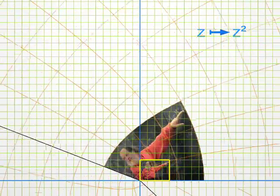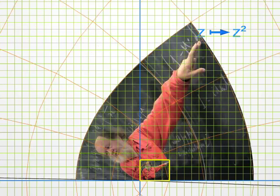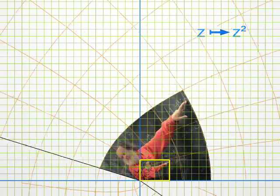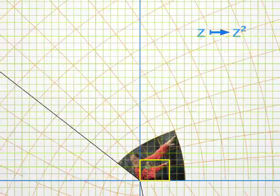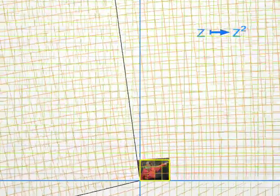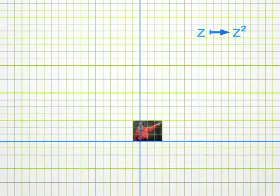OK, now we can transform the photo progressively. Notice that the argument of Z squared is twice the argument of Z, so that the right angle on the lower left of the photo is doubled under the transformation. It has turned into a 180 degree angle. Let me place the photo somewhere else, and let's look again at the same transformation Z squared.